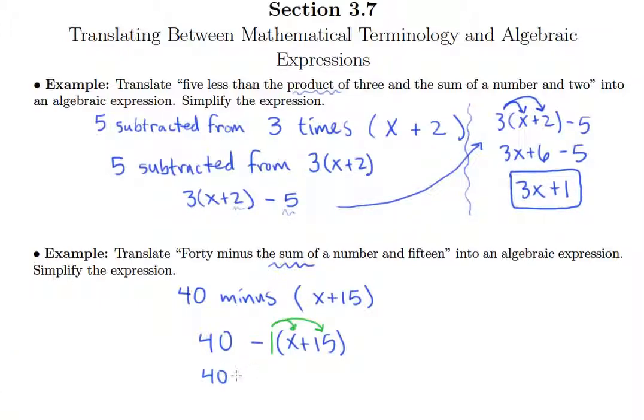And we have 40, negative one times X is negative X, so we'll put minus X, negative one times 15 is negative 15, so minus 15. And of course, 40 minus 15 is 25, so we have 25 minus X as our simplified answer.